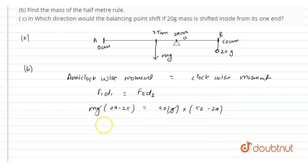By cancelling g we get m into 4 is equal to 20 into 21. From this we will get 20 into 21 divided by 4 and its mass comes out to be 105 grams. So the mass of the half meter rule is 105 grams.